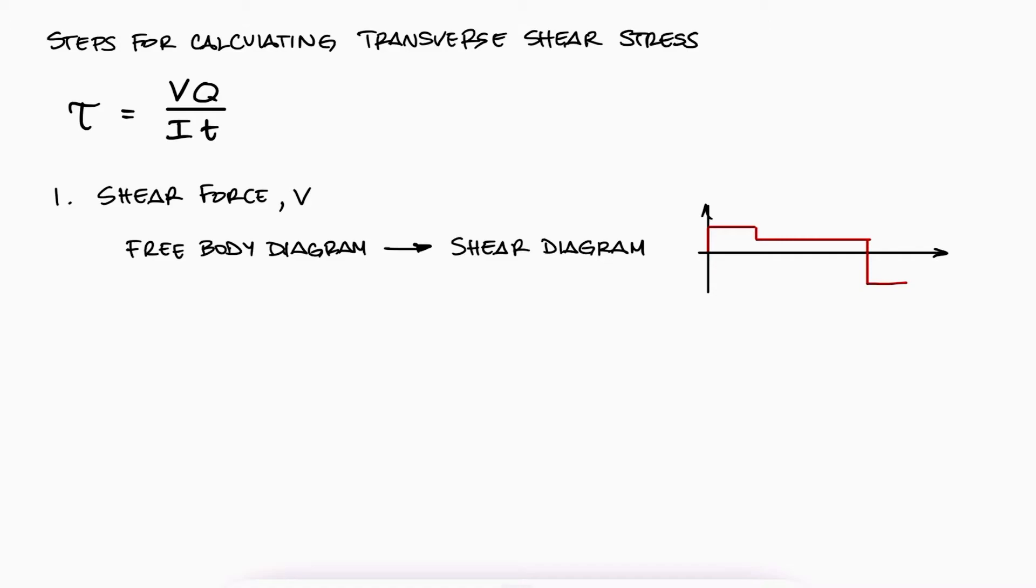So in general, when we're trying to find the shearing stress due to transverse shear of a beam at a specific location of the beam, we need to find four variables. If the value for the shear force v is not given, the shear load will generally be found through the use of a shear force diagram. If the location along the beam where we're trying to find the shearing stress is given, then we find v for that value of x.